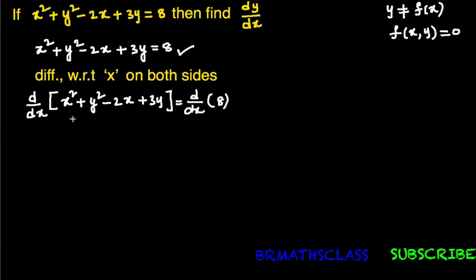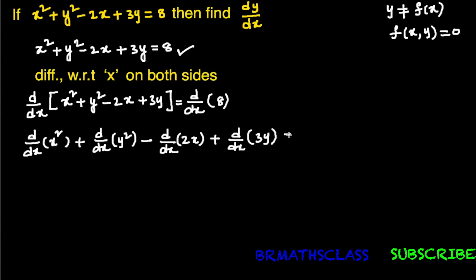On the left-hand side, we have d/dx of (x² + y² - 2x + 3y). We differentiate each and every term. On the right-hand side, 8 is a constant, and the derivative of a constant is 0. Now, the derivative of x² is 2x.